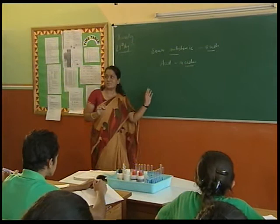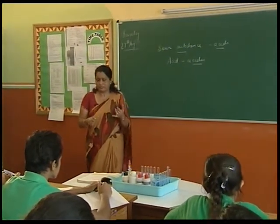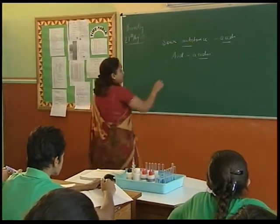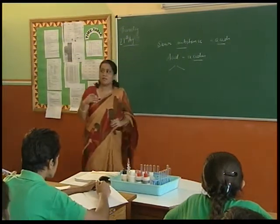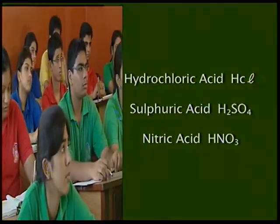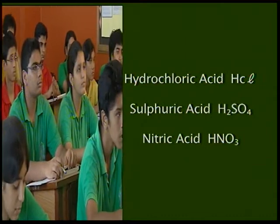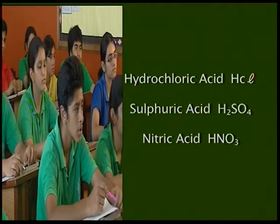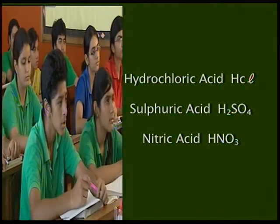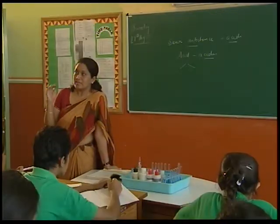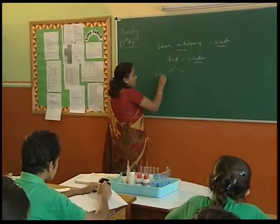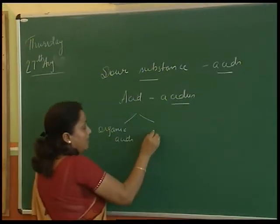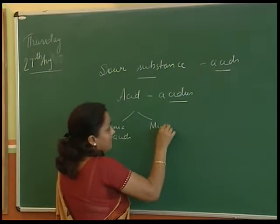All these naturally occurring substances are sour, but you can't really taste all the acids around us. You must have heard about hydrochloric acid, sulfuric acid, nitric acid — they are all so strong that you can't taste them. Acids can be classified further into two categories: organic acids and mineral acids.